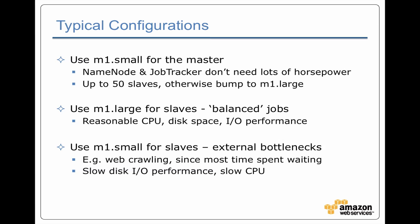For a typical configuration, unless you're running lots of servers or some significant number of extra high-capacity servers, you can use an M1 small for the master — the name node and job tracker don't need a lot of memory or compute power. For example, if you're running a cluster with M1 smalls as the slaves, you can go up to somewhere between 30 and 50 slaves before the master has to be bumped up from an M1 small to an M1 large. For typical Hadoop jobs, the M1 large is a good machine for the slaves.